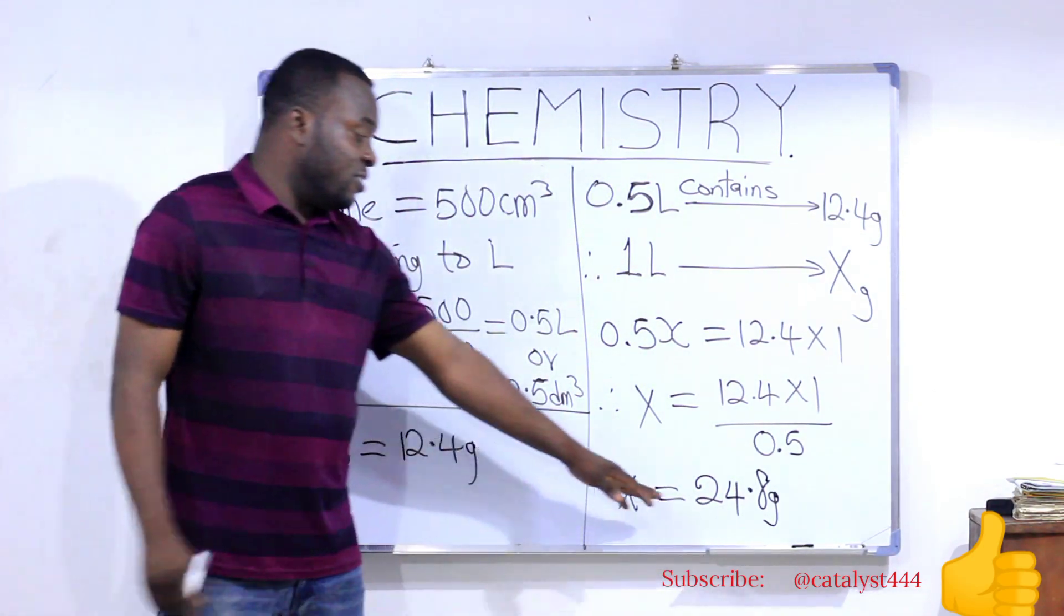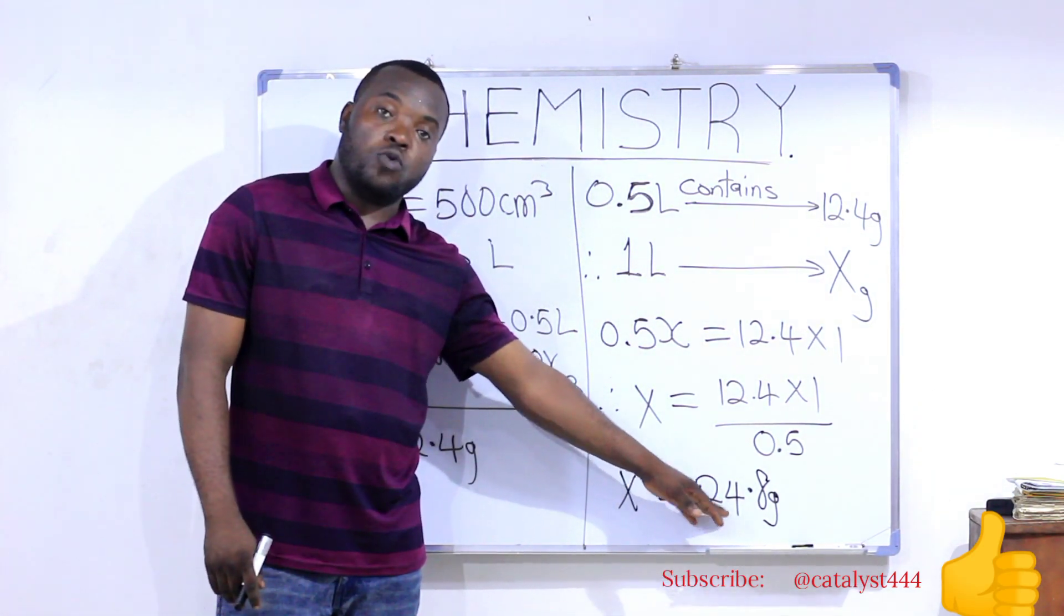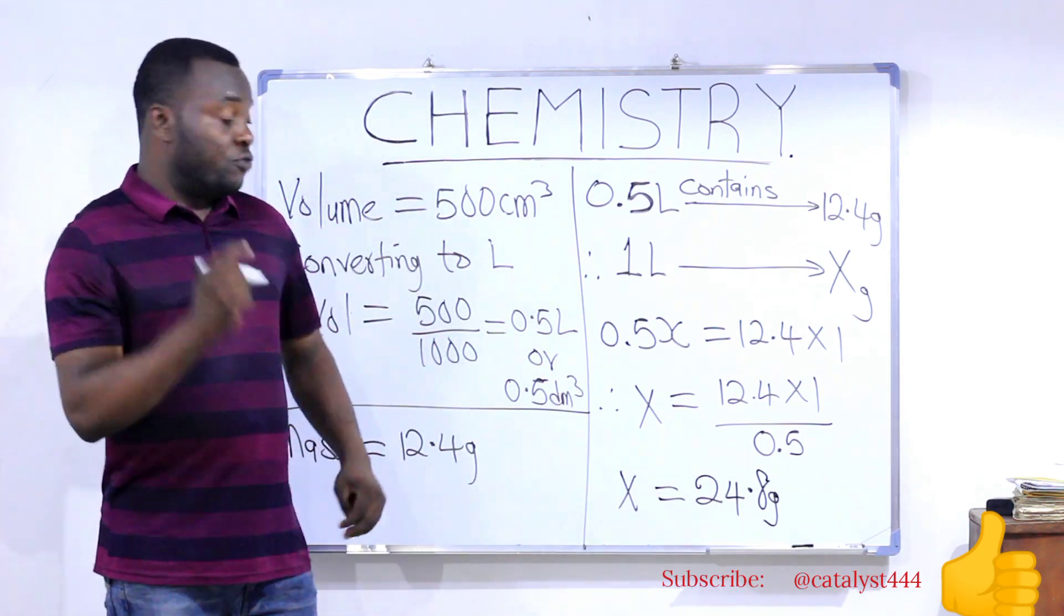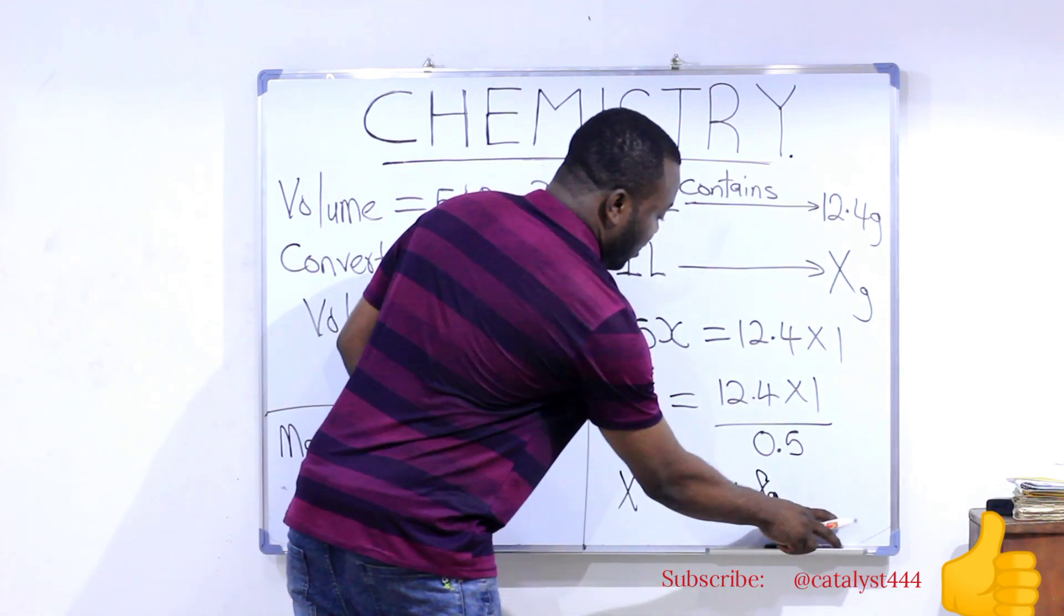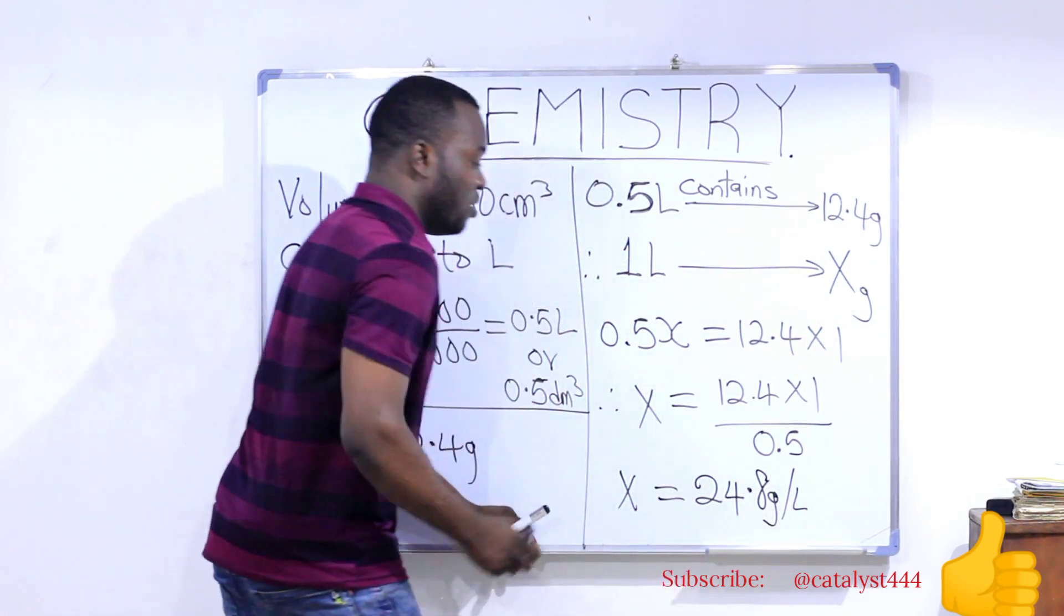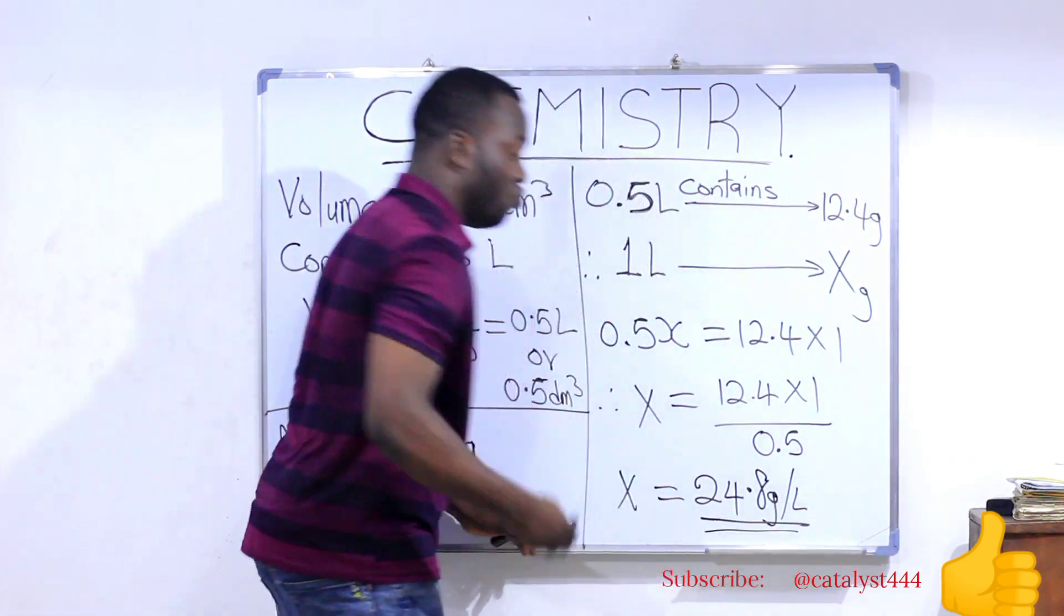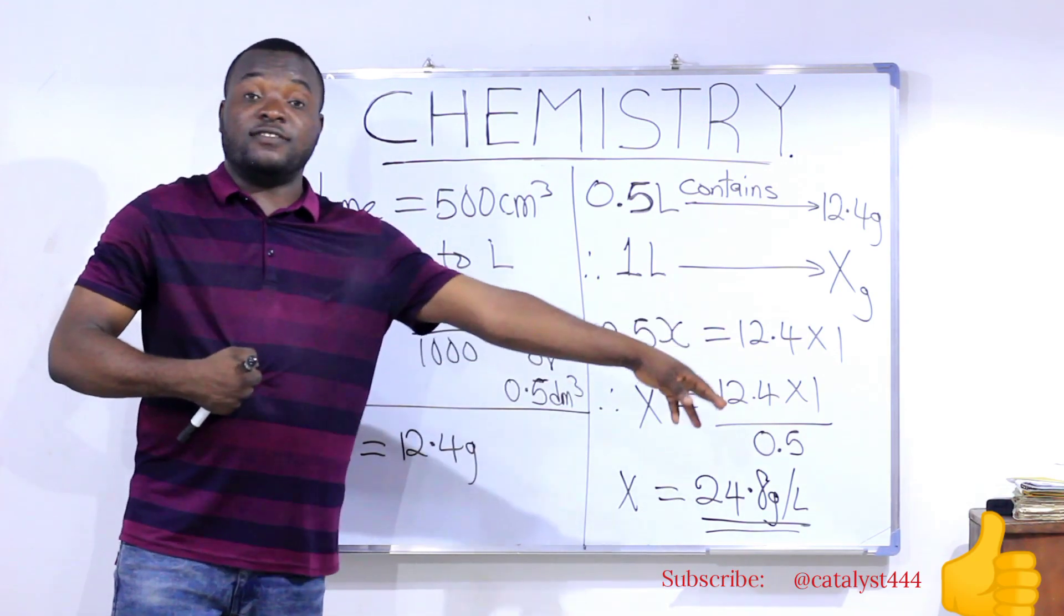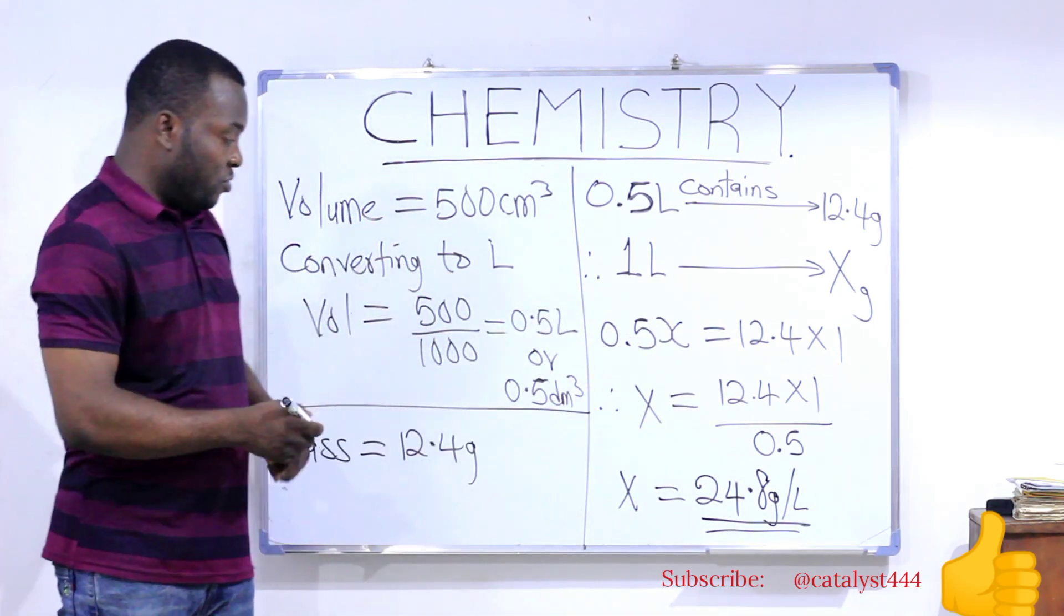Now, since this is the number of grams that will be in one liter, that number of grams that will be in one liter is your mass concentration. So, we'll report our answer as 24.8 grams per liter. That is the mass concentration. You can as well call it 24.8 grams per dm³. It's the same thing.